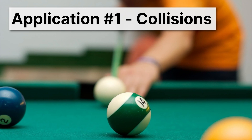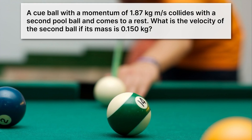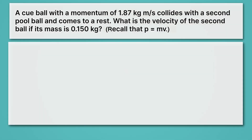Let's apply this principle to collisions. Let's go ahead and solve for the velocity of this second ball. The key equation we're going to use is conservation of momentum, which says that the momentum initial is equal to the momentum final. At the beginning, only the cue ball is moving, so the initial momentum is all about the cue ball. Meanwhile, the final momentum is when only that second ball is moving, so it's all about the second ball.